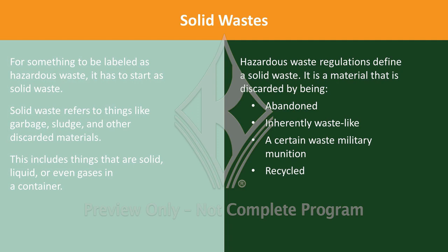For something to be labeled as hazardous waste, it has to start as solid waste. Solid waste refers to things like garbage, sludge, and other discarded materials. This includes things that are solid, liquid, or even gases in a container. These materials come from places like factories, businesses, mines, farms, and regular community actions.